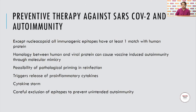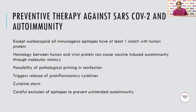What is the risk of preventive therapy against SARS-CoV-2 with respect to autoimmunity? When you think of prevention, it is the vaccine. Except for the nucleocapsid vaccine, all immunogenic epitopes have at least one match with human protein, which always increases the risk of triggering an autoimmune response. Homology between human and viral protein can cause vaccine-induced autoimmunity through molecular mimicry. There is a possibility of pathological priming in reinfection, which can trigger release of pro-inflammatory cytokines and a cytokine storm. Careful exclusion of epitopes to prevent unintended autoimmunity is very important when making vaccines.